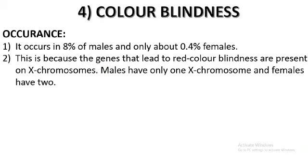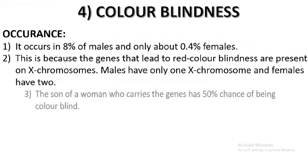Color blindness is more common in males because males have only one X chromosome, and the chance of that X chromosome carrying the recessive gene is higher. Females have two X chromosomes, so even if one is recessive there is another that can be dominant. A female will only get the disorder if both X chromosomes carry the recessive gene, which is much less likely.